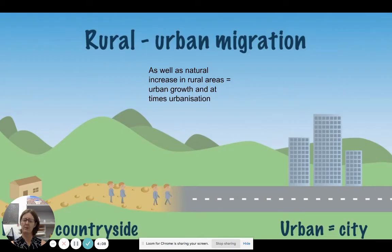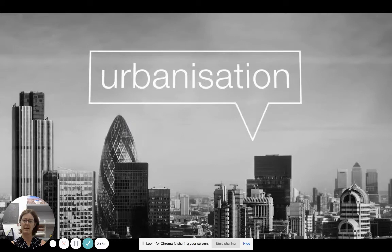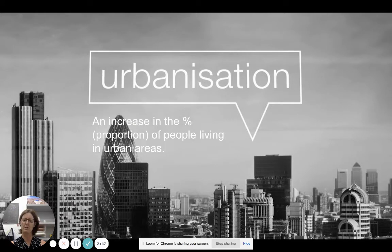Generally this is in our low-income countries. If I talk about urban growth and at various times urbanization, I need an increase in percentage or proportion of people living in urban areas. I also look at natural increase — remember some of these people moving into urban areas are of the reproductive age group. Don't get confused: urbanization requires an increase in the percentage or proportion of people living in urban areas.